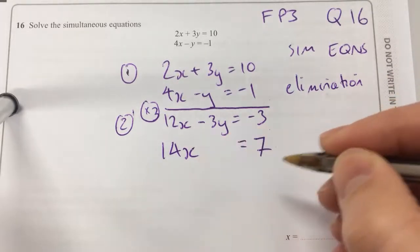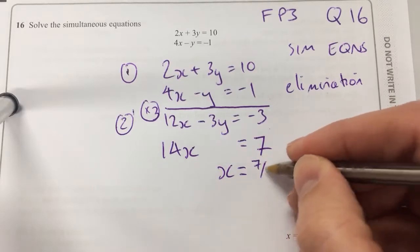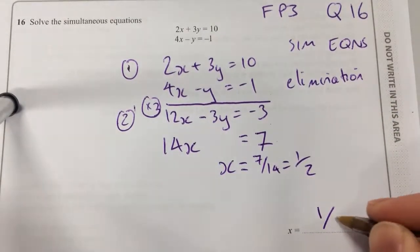7. So now I've got 14x equal to 7, so then x is? A half. Yeah, 7 over 14, which reduces to a half. That'll get me that answer then. What do I do then to find out the y?